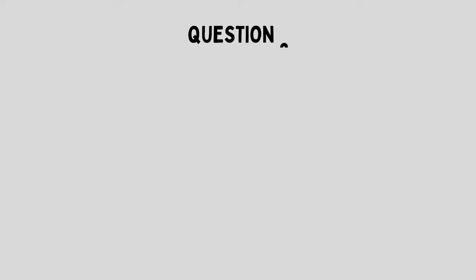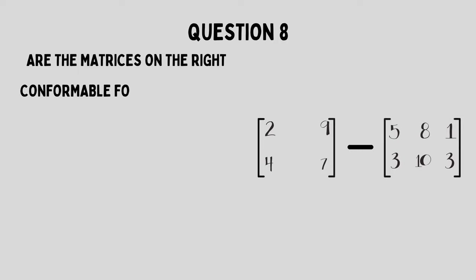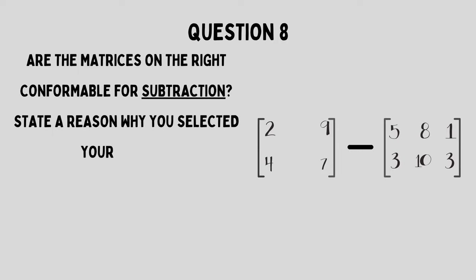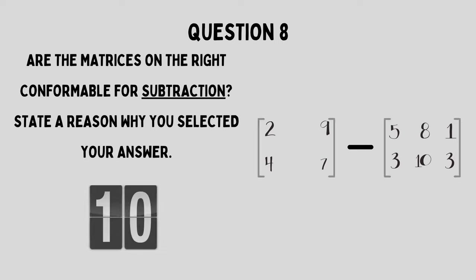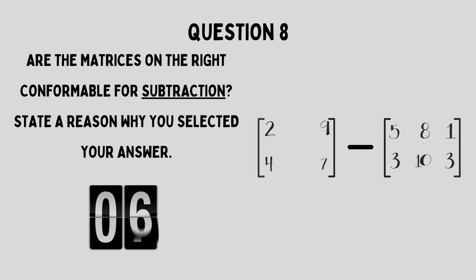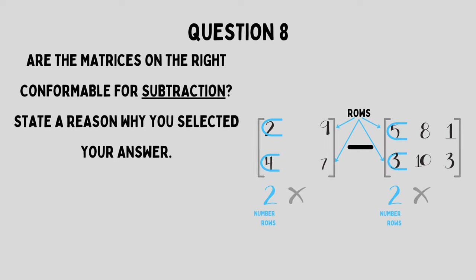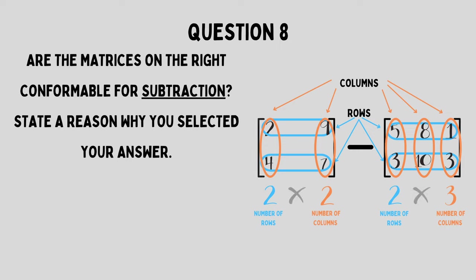Question number eight: Are the matrices on the right conformable for subtraction? State a reason why you selected your answer. Similar to the addition question, they have a different number of columns. They have the same number of rows, but the number of columns are different. Therefore, we cannot subtract these from each other — they are not conformable for subtraction.